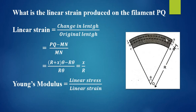Here, PQ is at a distance x from the neutral axis. Therefore, the arc length of PQ is R plus x into theta minus arc length of the neutral axis R theta. Simplifying this expression we get x by R.